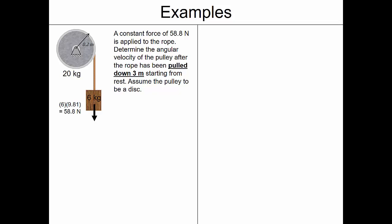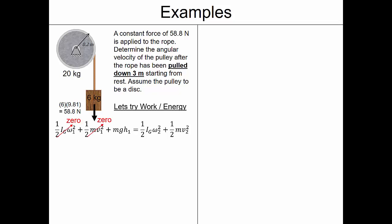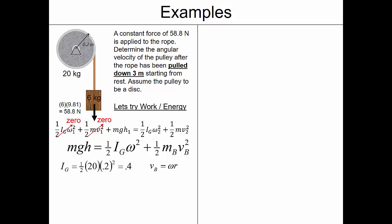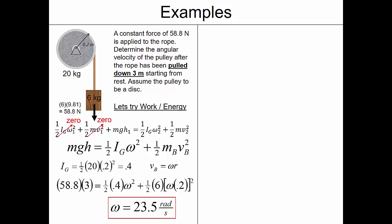What if instead of an applied force of 58.8 newtons, we have a block weighing 58.8 newtons pulled down for 3 meters? We use work and energy since we're dealing with a distance. Now there's potential energy due to elevation, and in the end there's translational energy from the block. With no initial kinetic energy and no external work, the equation gives: mass moment of inertia of 0.4 for the spool, and the block's velocity equals angular velocity times the radius. Substituting and solving gives omega = 23.5 radians per second.